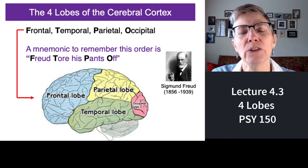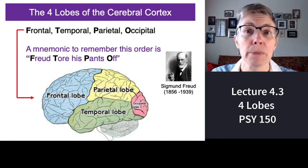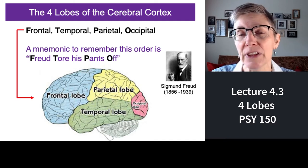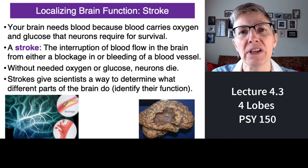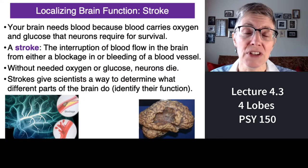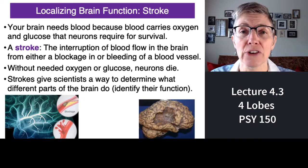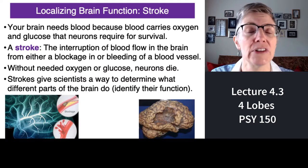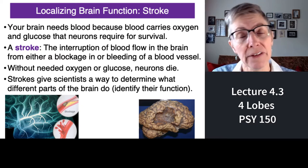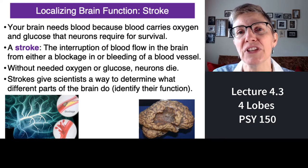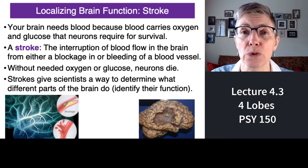I'm going to tell you a little bit about each lobe and some of the interesting things associated with each lobe. But first I want to take a moment to explain how scientists figured out what various parts of the brain actually do normally. A significant proportion of those insights came from the study of people who had had strokes.